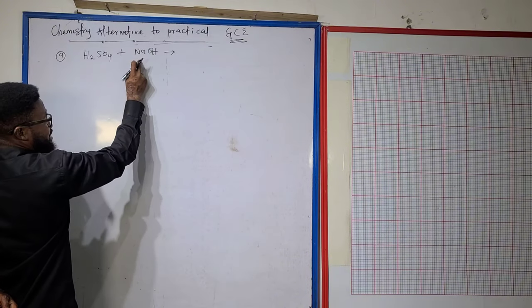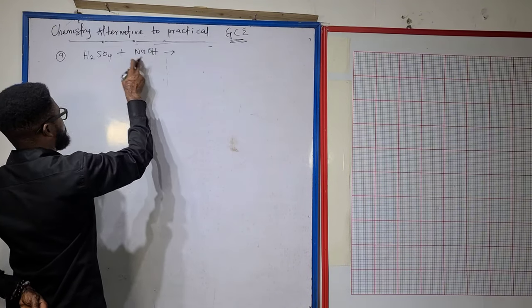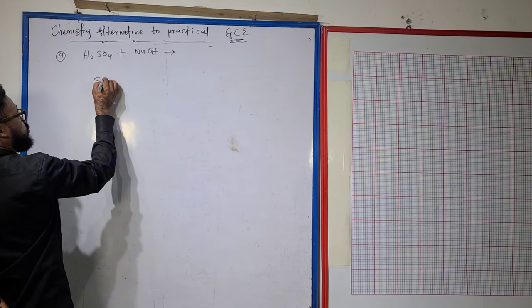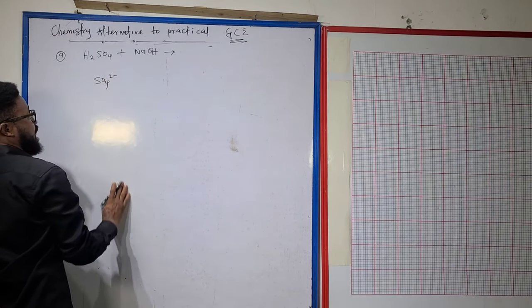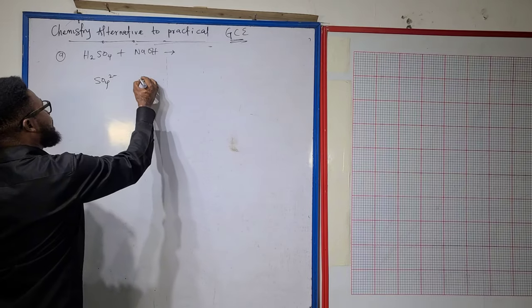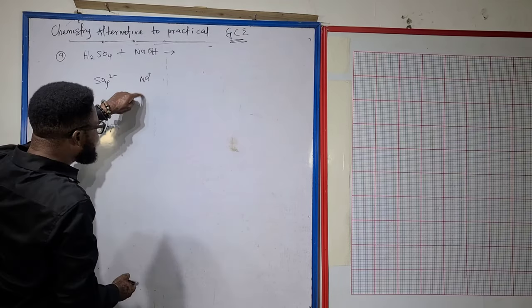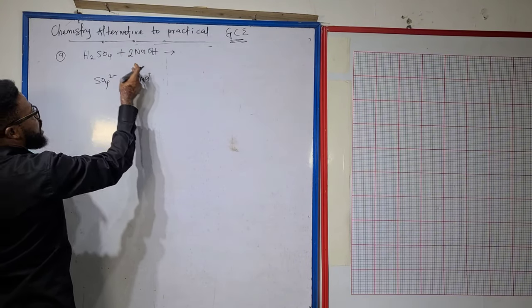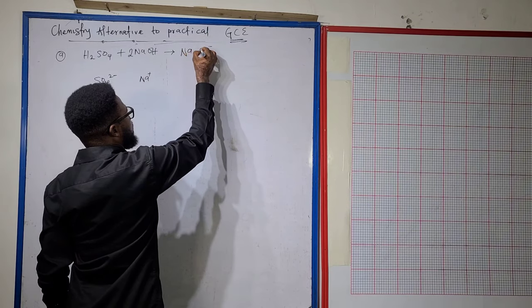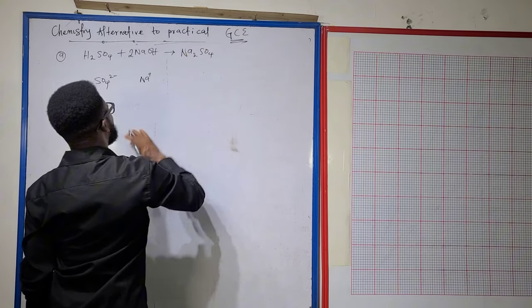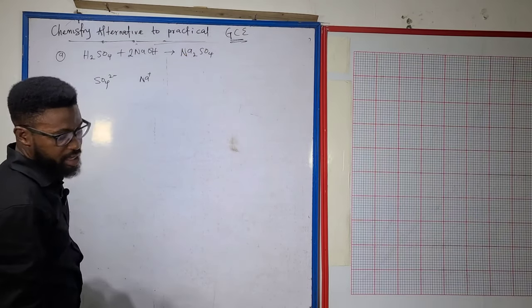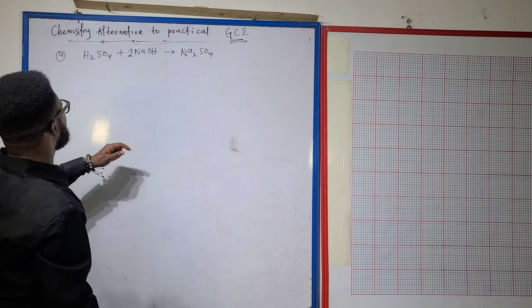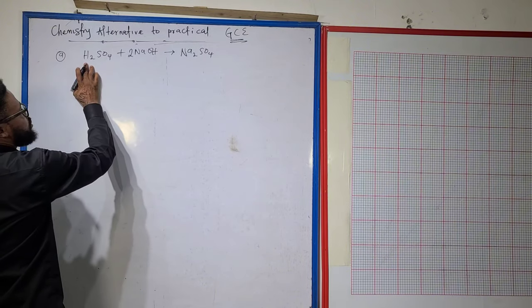The sodium from the base is going to combine with the sulfate from the acid. Since SO₄ carries a charge of -2 and sodium carries a charge of +1, we need one more sodium. That gives us Na₂SO₄ looking balanced.